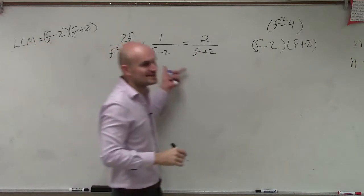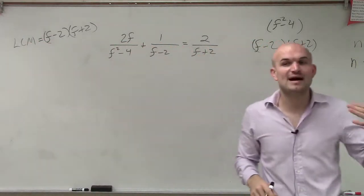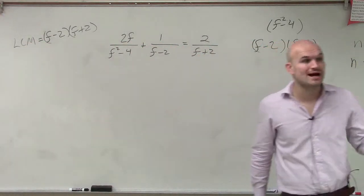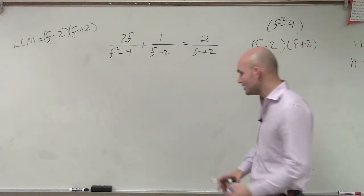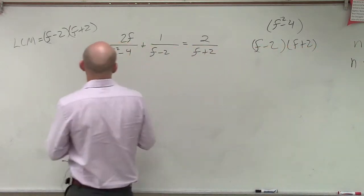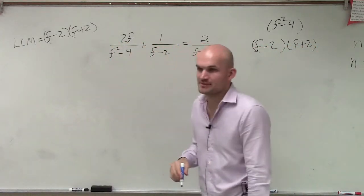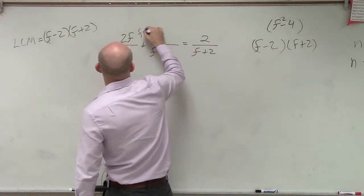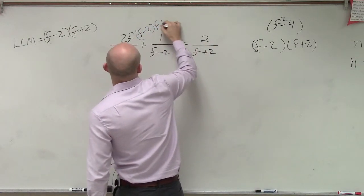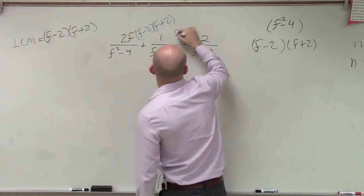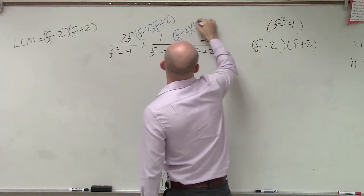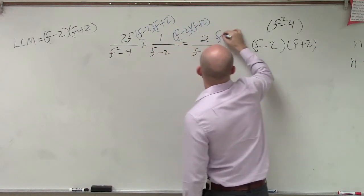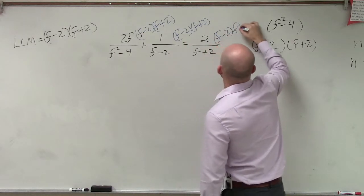So again, to get this, to get rid of my denominator so I don't have rational expressions anymore, I'm going to want to multiply every single term times f minus 2 times f plus 2.